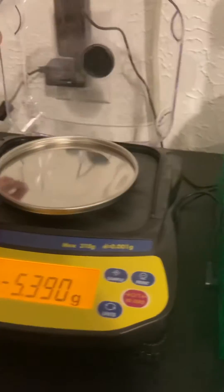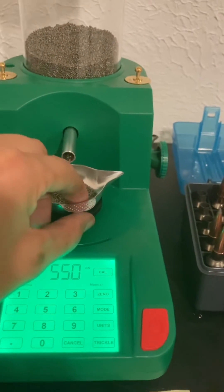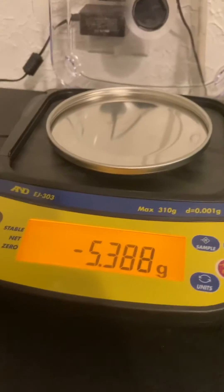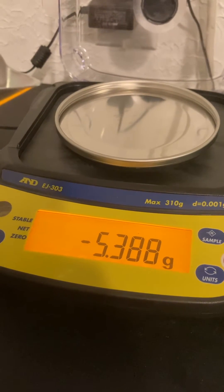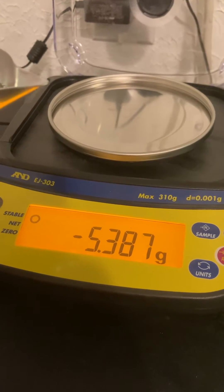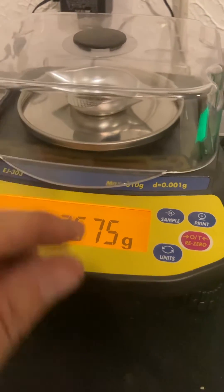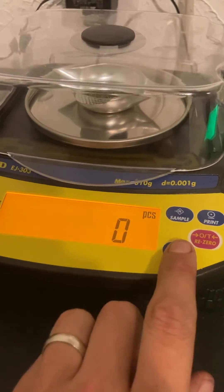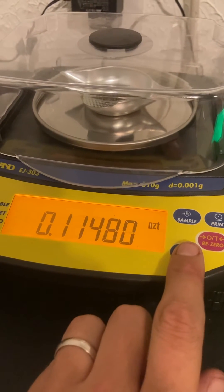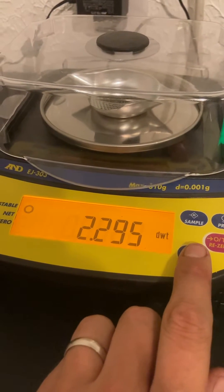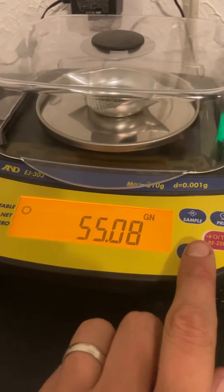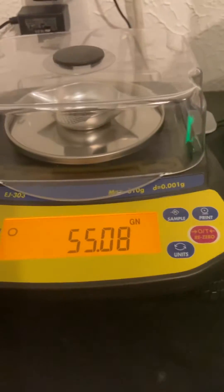So I zeroed this out with the pan, no powder, so obviously you'll see it's negative at the moment. 5.388 is the weight of the pan. Let's make sure that weighs... oh, let's get the units right. There we go, 5.508, all right.